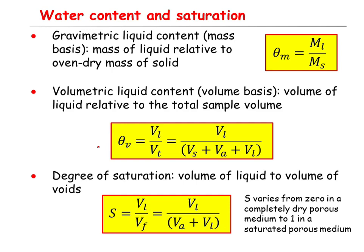Another definition is the volumetric liquid content, or volumetric water content, defined as the volume of the liquid Vl related to the total volume. The total volume equals the volume of the solid phase plus the volume of the air phase plus the volume of the liquid phase. So theta v equals Vl divided by Vs plus Va plus Vl.